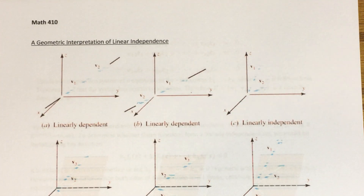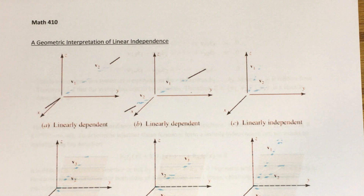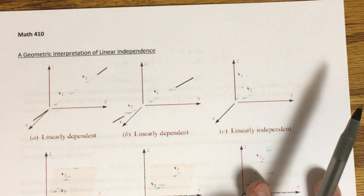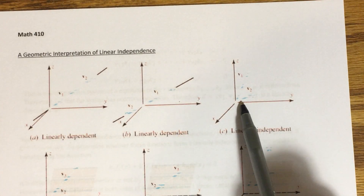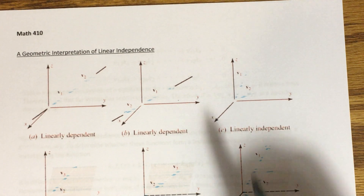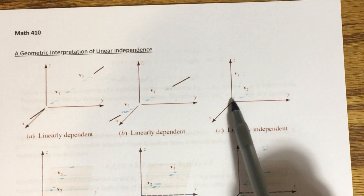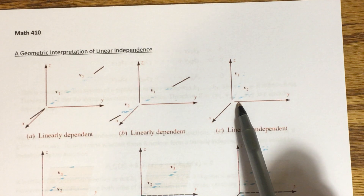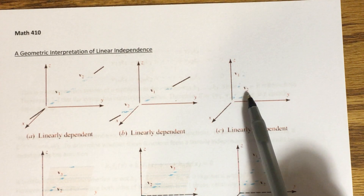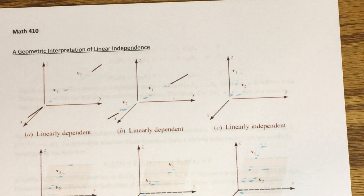In the case of a set of two vectors in R3, if that set is linearly dependent, then the two vectors lie on the same line — in other words, they are collinear. Geometrically, that's how we understand linear dependence in R3 (and R2 as well). A set of two vectors is linearly independent if and only if they are not collinear — they have different directions and so one could not be a scalar multiple of the other. Therefore, two vectors in R3 are linearly independent if they're not collinear.